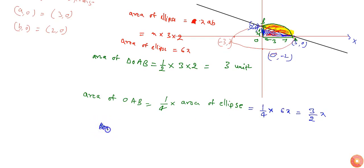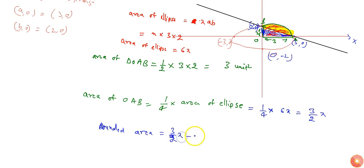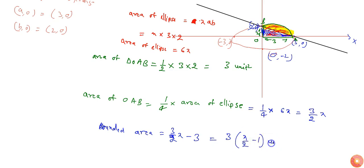So the bounded area will be 3 pi by 2 minus 3, or I can say 3 pi by 2 minus 3 square units.